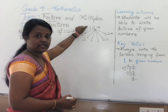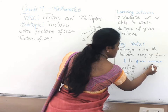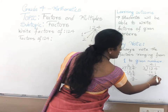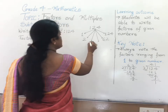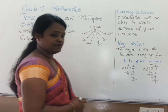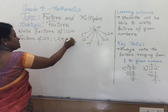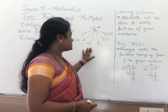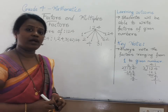Can we divide 124 by 3? Not possible — you can verify by actual division. Let us check with 4: 4 31s are 124. This way we write factors of 124 as 1, 2, 4, 31, 62, 124. Note that we don't have any other factors lying between 4 and 31. This concludes that factors always range from 1 to the given number.